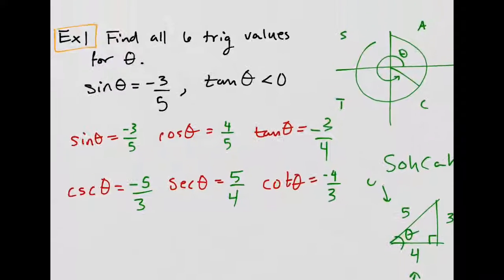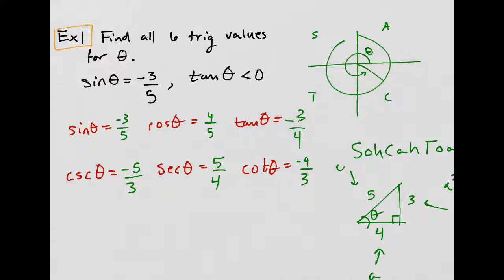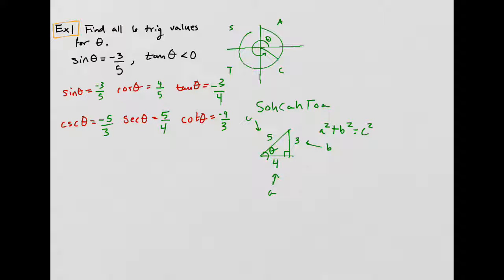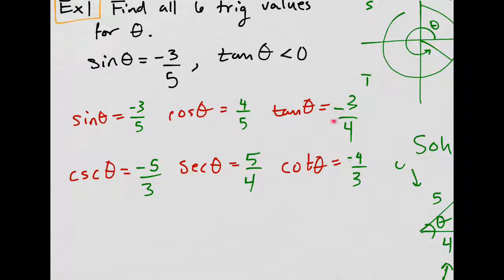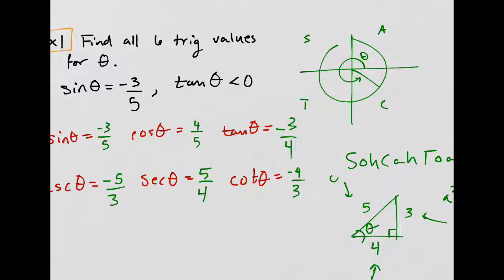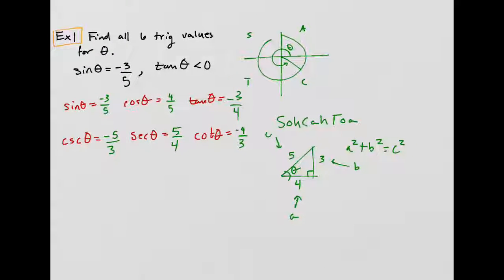So what did we do? First, we identified the quadrant in which theta lies. Second, we used the right triangle definitions to find the regular ones, choosing the sign based on the quadrant. That's why we had to figure out which quadrant - it tells us the sign of each of the trig functions.